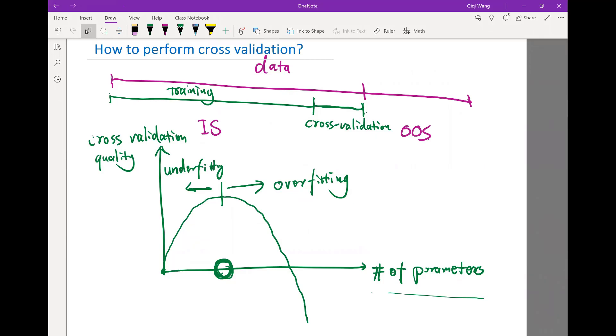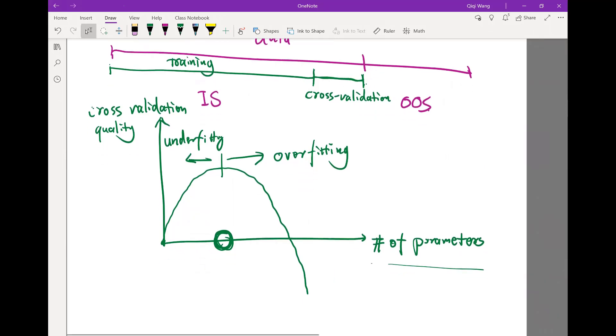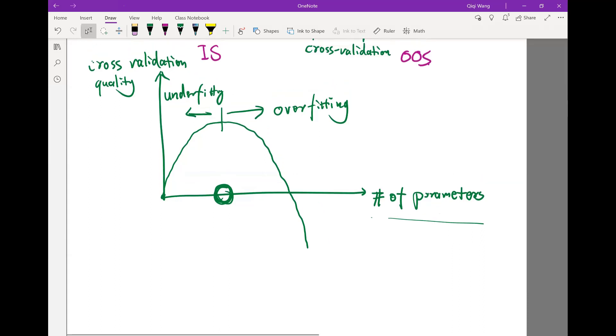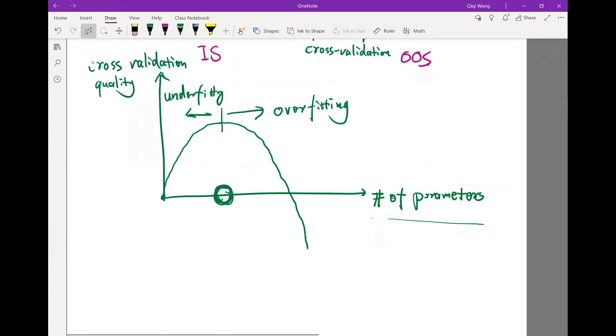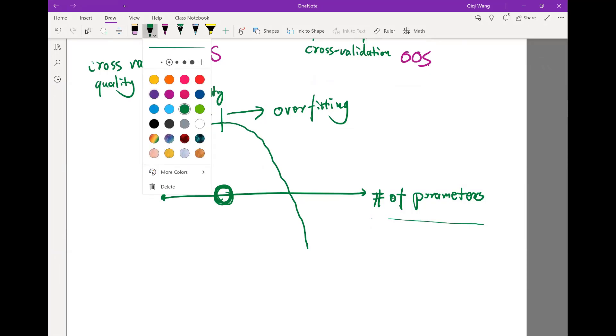Alright, okay. So another way to perform this cross validation is, instead of tuning the number of parameters, tuning something called the regularization.